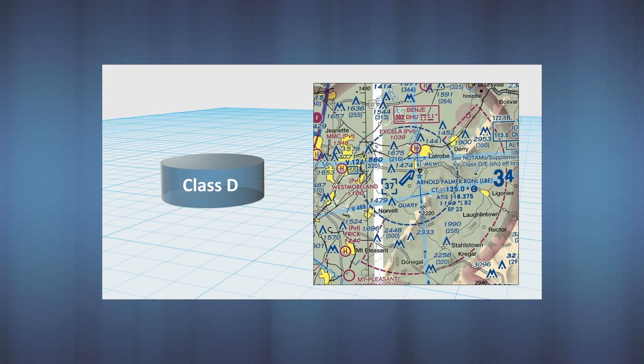The top of Class D is specified inside of brackets in hundreds of feet MSL. In this example, the Class D extends from the surface up to 3,700 feet above sea level. Field elevation is right at 1,200 feet, so the Class D extends 2,500 feet above the ground.